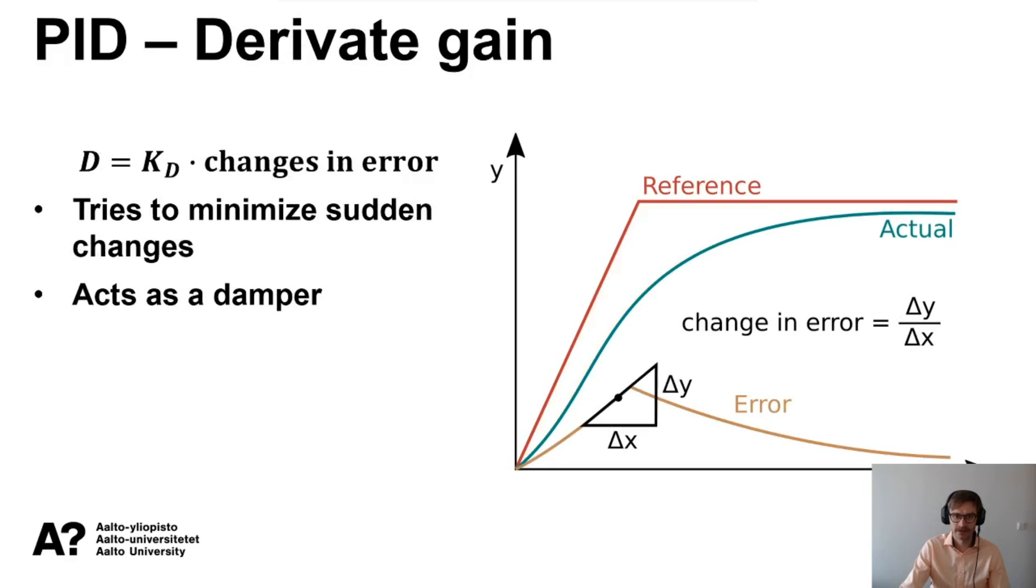Then lastly we have derivative gain, which is the change in the error times our gain. Here I have tried to portray what the change in the error looks like. In the beginning the error gets larger and larger until we reach approximately this point and then it starts to get smaller. That's what I have portrayed here with this error curve.